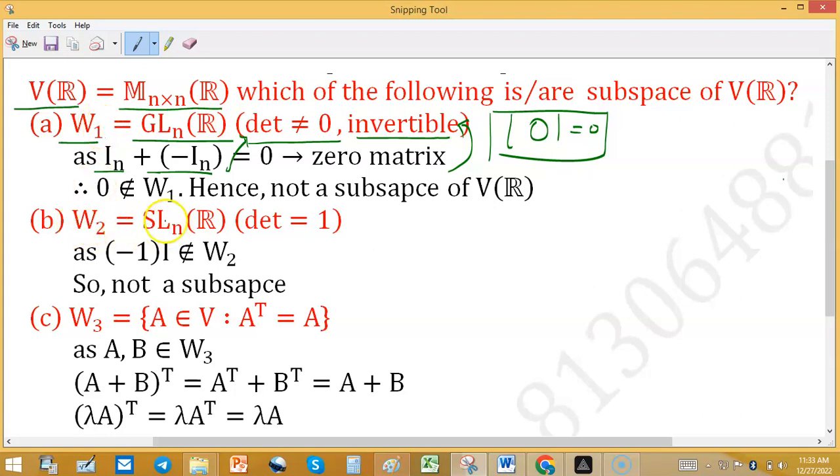W2 is SL_n(R), which means the special linear group having determinant equal to one, contains all those matrices having determinant one.